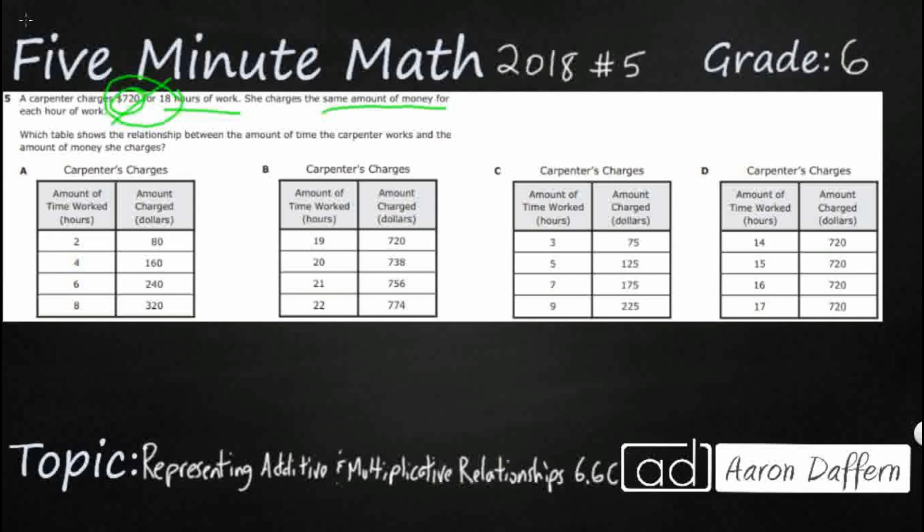So 18 hours equals $720. And so really when we're looking at that we're looking at a rate. How much does she charge per hour? Well, what we could do is we can go ahead and take that $720. When we're thinking of the dollars that she charges per hour, that really actually gives us our equation, $720 divided by 18.